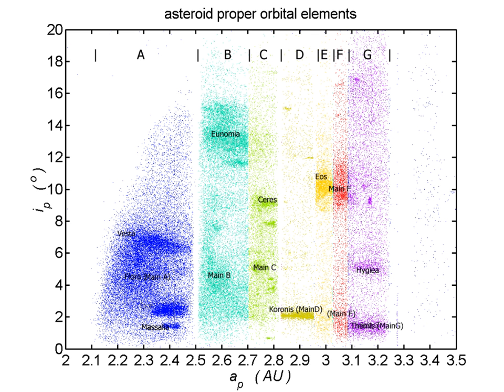An asteroid family is a population of asteroids that share similar proper orbital elements, such as semi-major axis, eccentricity, and orbital inclination.